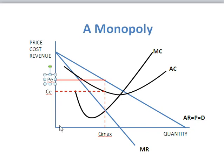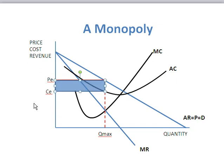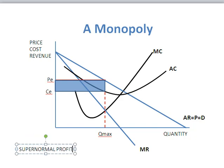The profit is calculated by multiplying PE times Q max, which gives us total revenue, and CP times Q max gives us total cost. As you can see, the price received is higher than the cost, so in this case it is a profit. That shaded region is called a super-normal profit — there it is right there.